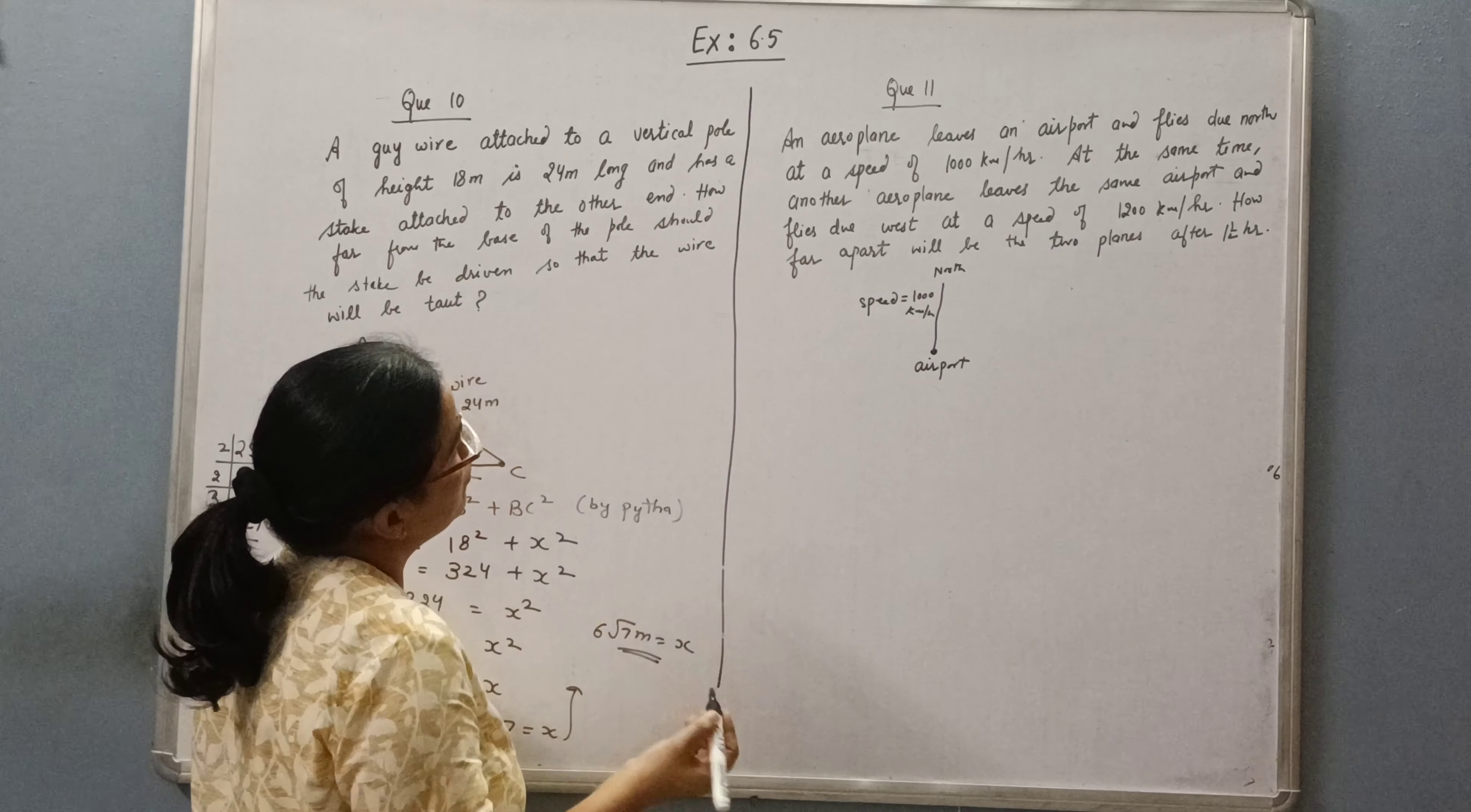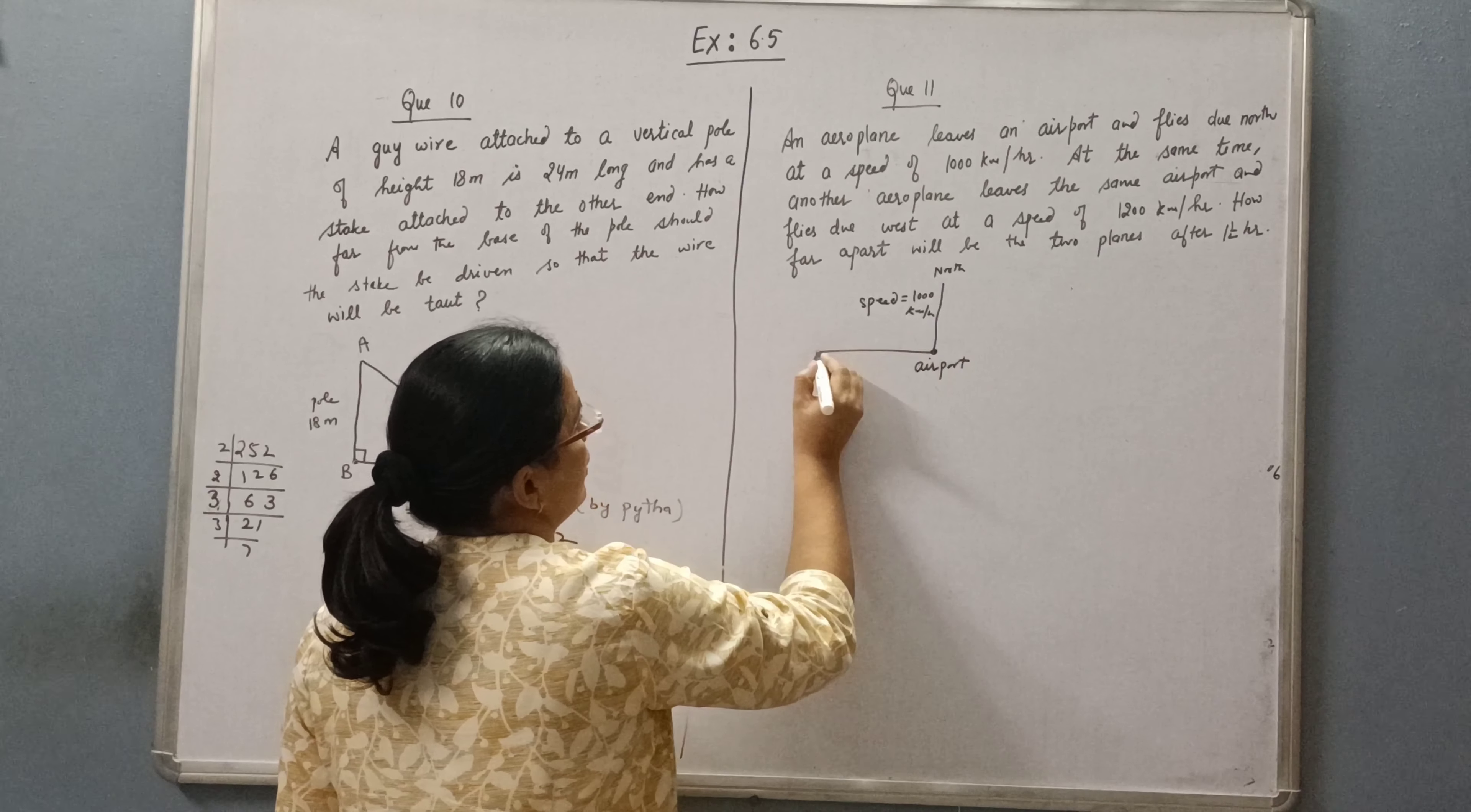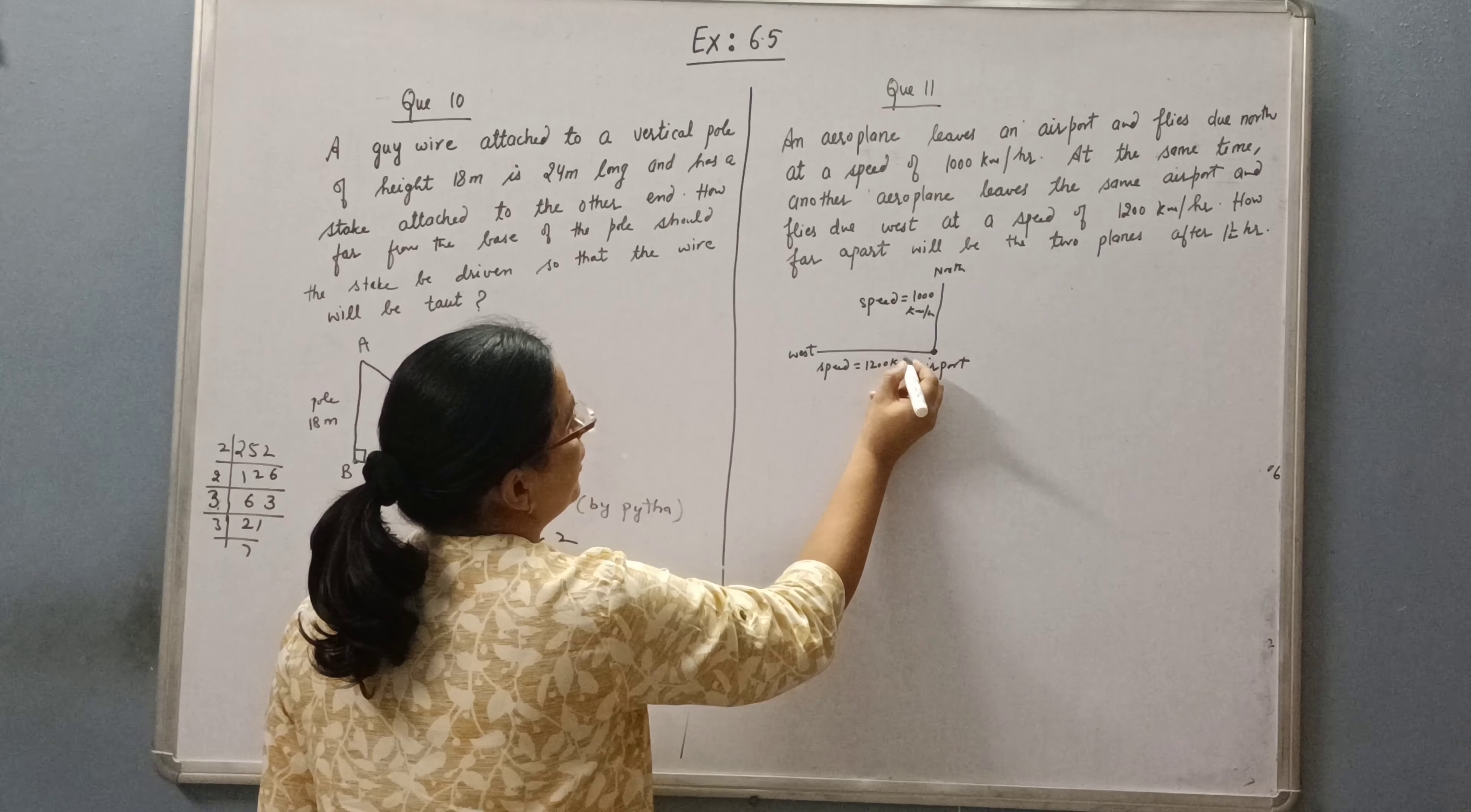This is north at a speed of 1000 km per hour. And at the same time another aeroplane leaves the same airport and flies due west. This is west.